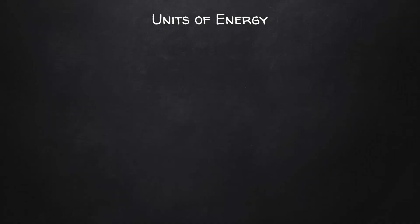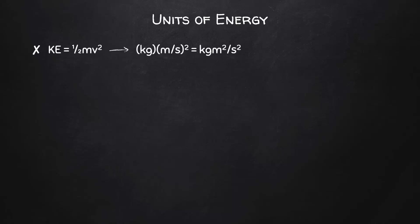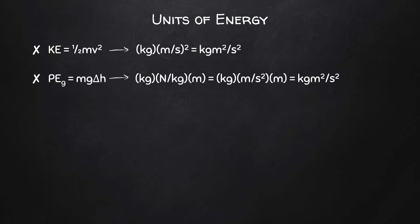Before we look at some examples, let's talk about the units of energy. For the kinetic energy equation, we would plug in kilograms and meters per second, which gets squared, and we would end up with kilogram meter squared per second squared. For gravitational potential energy, we would have kilograms times newtons per kilogram times meters, or kilograms times meters per second squared times meters, and we would also end up with kilogram meter squared per second squared.